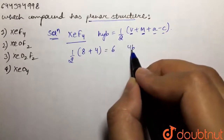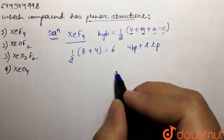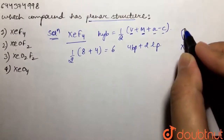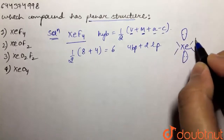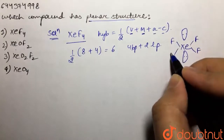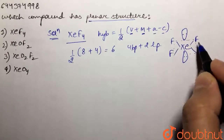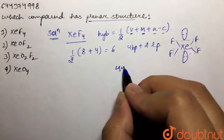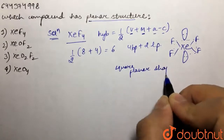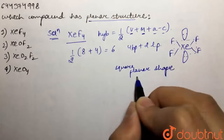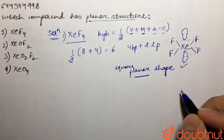It is making four bond pairs, which means we have two lone pairs. So its structure would have two lone pairs and four bond pairs with fluorine. This is a square planar shape. That means this particular molecule is planar in nature. So our first option is a valid answer.